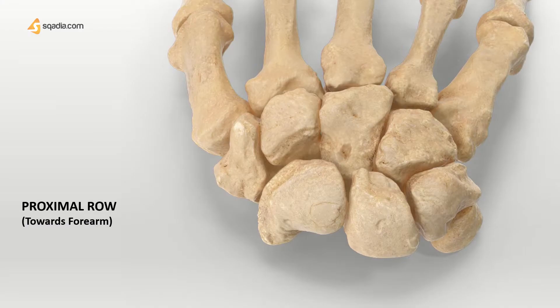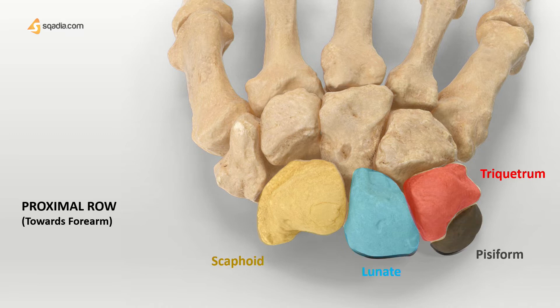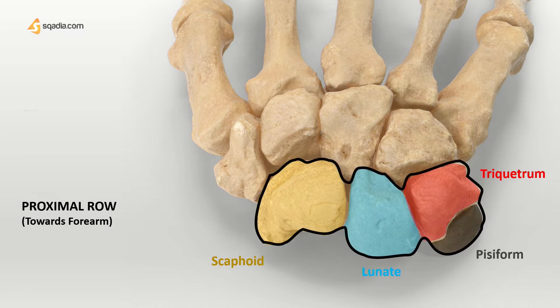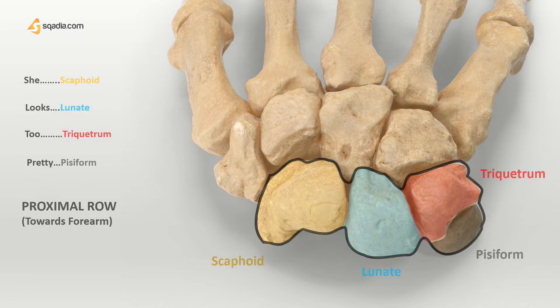Every carpal bone has its own extraordinary shape and is multifaceted. These are situated in two columns of 4 in the antebrachial area. Approaching the carpal bones from the lateral side and moving towards the medial side, the sequence of bones is: scaphoid, lunate, triquetrum, and pisiform — making up the mnemonic 'she looks too pretty.'